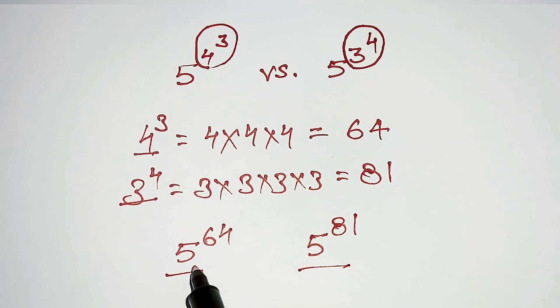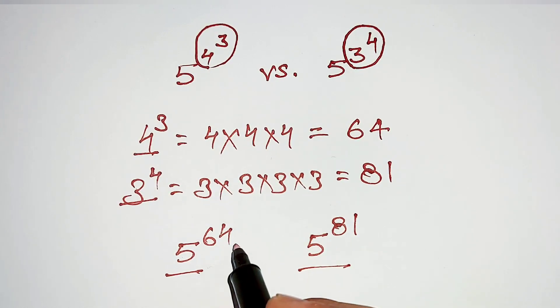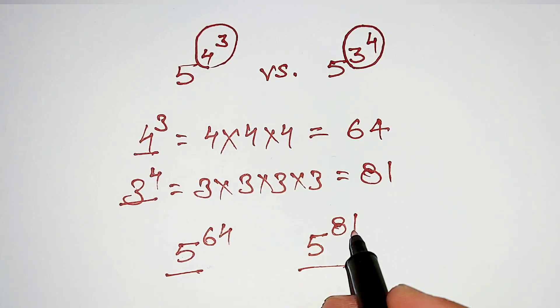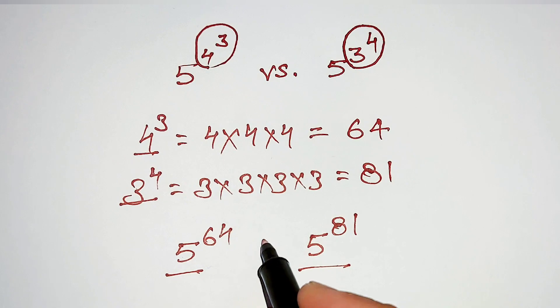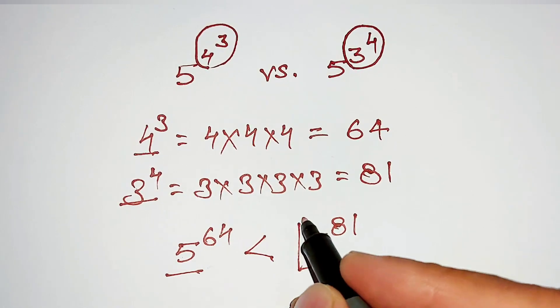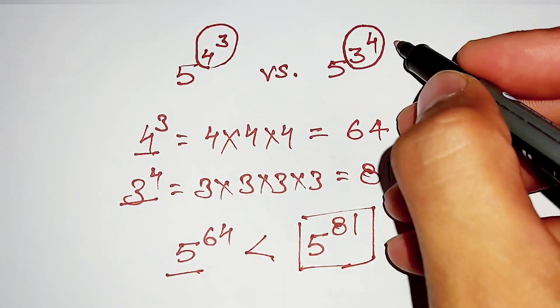Both sides, base are same, then we are comparing power on both sides, which is clearly seen, 81 is larger than 64, then this number is larger, like this.